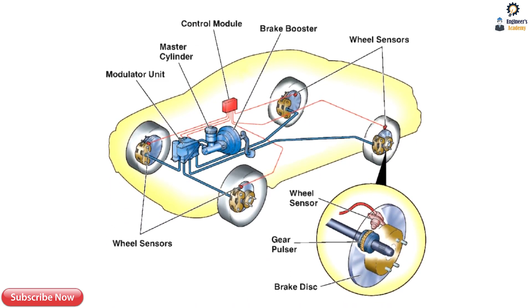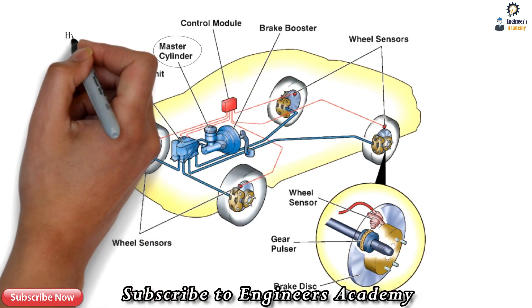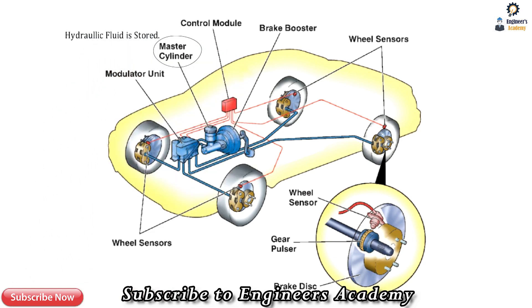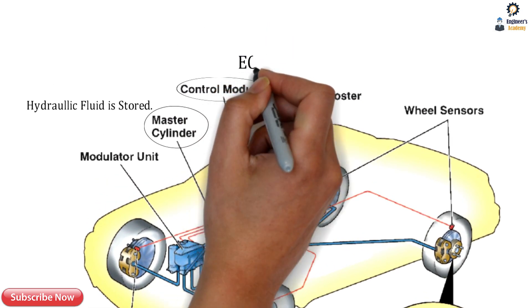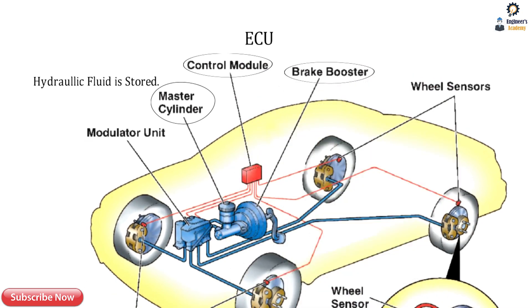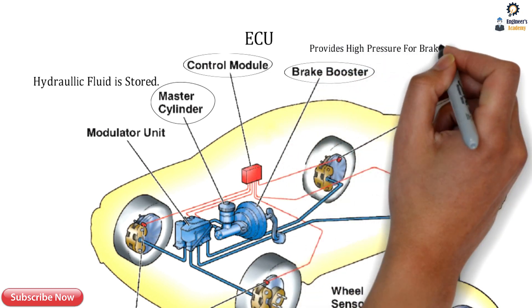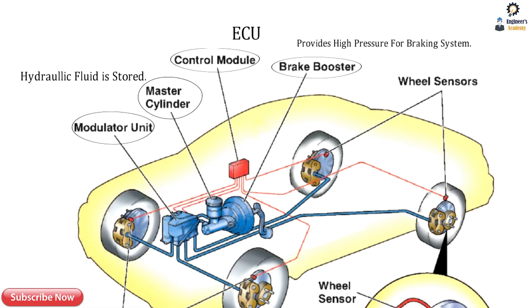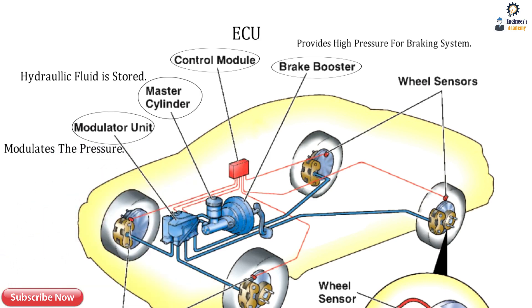The first component is the master cylinder, which stores the hydraulic fluid required for the brakes. Next is the control module, also called the ECU — Electronic Control Unit — which is connected to the sensors and other equipment. The brake booster provides the high pressure required for the braking system. The modulator unit modulates and regulates the pressure.